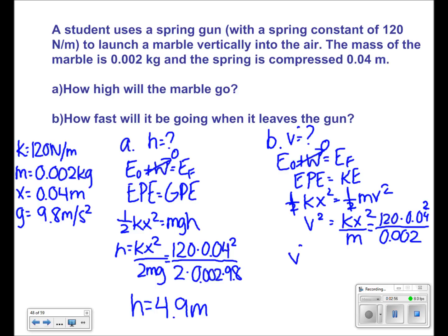Solving for v squared, we get that v squared is equal to 96. And square rooting both sides, we get that velocity is equal to 9.8 meters per second for this problem.